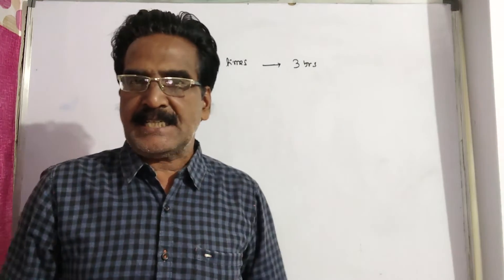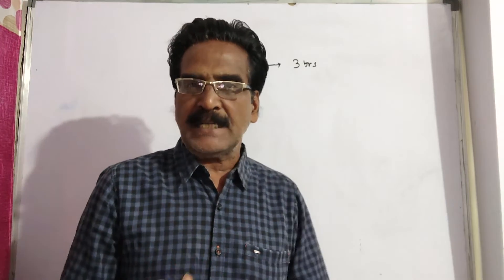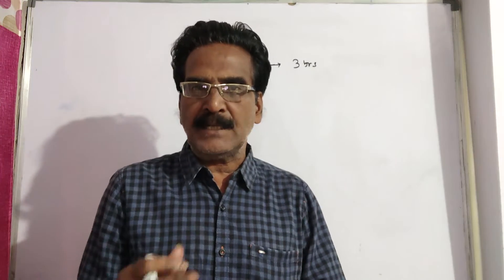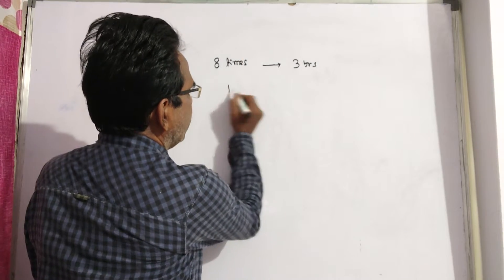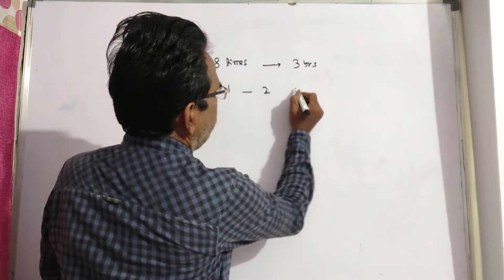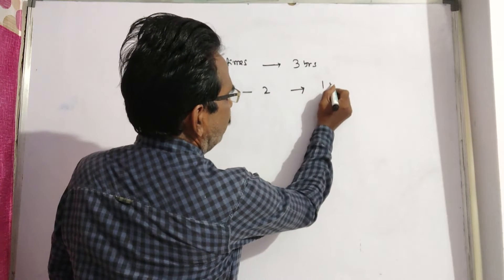8 times in 3 years means we can understand like this: the amount is getting doubled after every 1 year. Please look at this. See, 1 rupee becomes 2 rupees in 1 year.